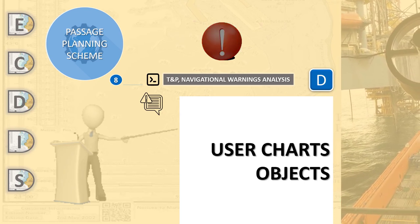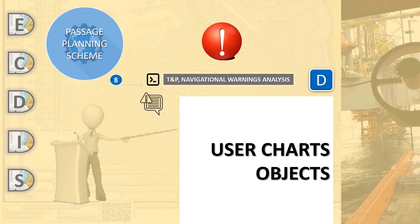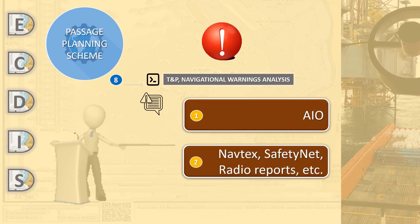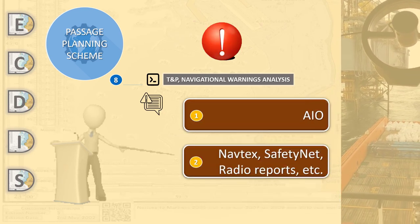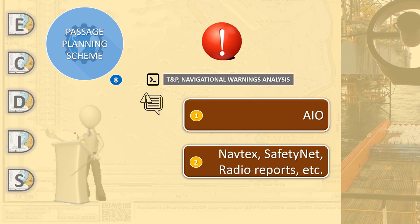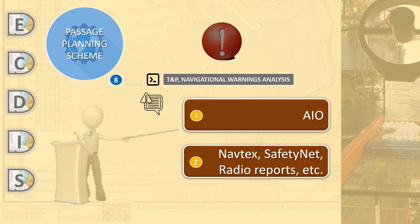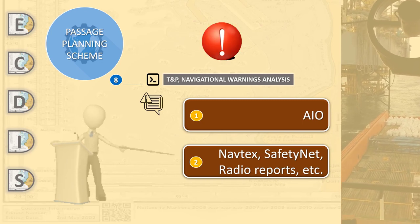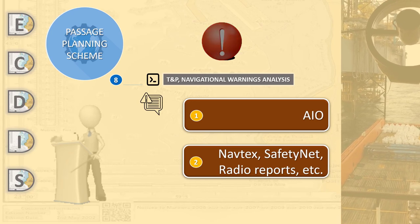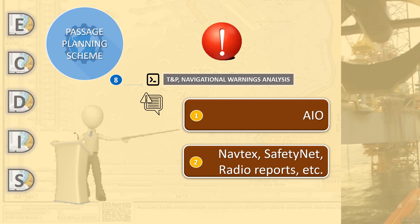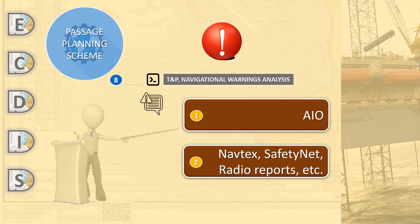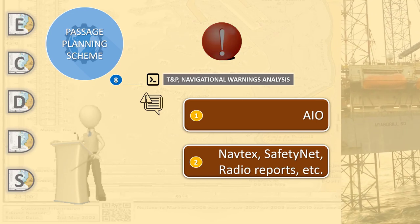Important and relevant information has to be added to the relevant charts as user objects. This can be of a permanent or temporary nature. Several objects provide the function to add an expiry date to the object, after which it will disappear automatically. After analyzing TNPs and navigational warnings, caution and no-go areas may appear.